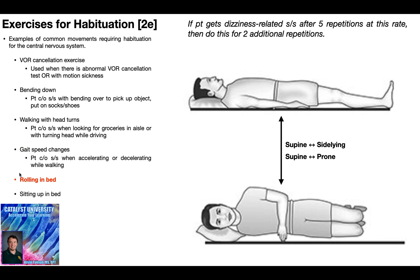The patient may also get symptoms rolling in bed — from supine to sidelying, supine to prone, or other position combinations. For example, if rolling from supine to right sidelying is the aggravating movement and the patient gets dizziness-related symptoms after five repetitions at a particular rate, you would have them do two additional repetitions for a total of seven.